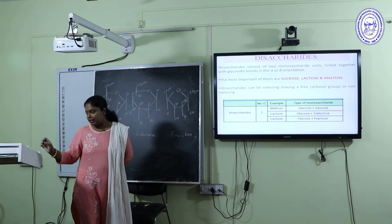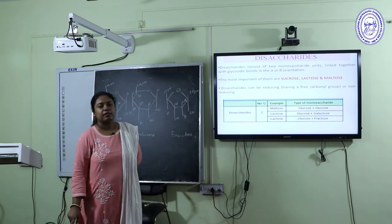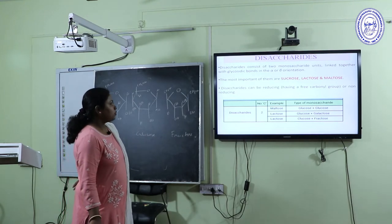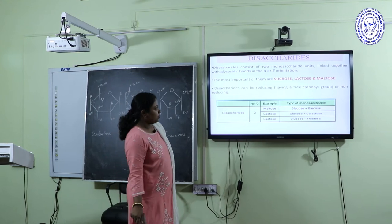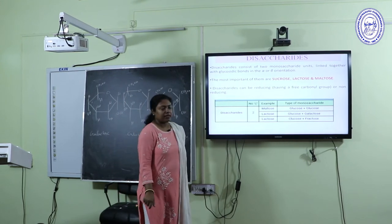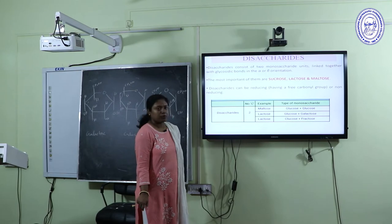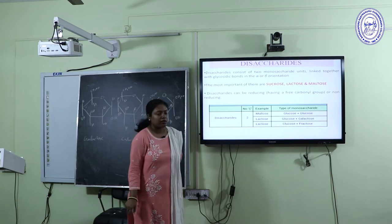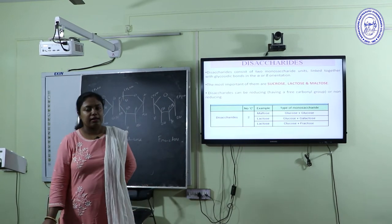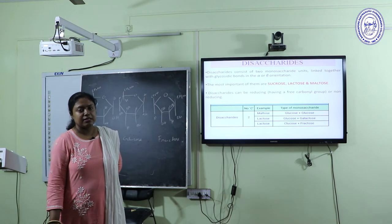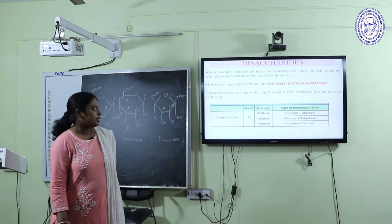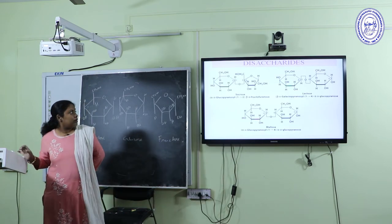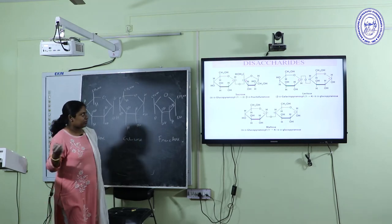Let's discuss disaccharides. Disaccharides are composed of two sugar units. Maltose is a disaccharide consisting of two glucose molecules. Lactose is a disaccharide consisting of glucose and galactose. Sucrose is the most commonly consumed table sugar, consisting of glucose and fructose.